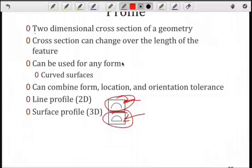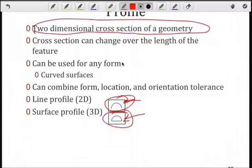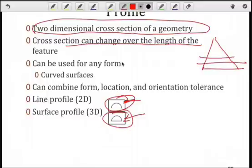To understand a profile, think of it as a two-dimensional cross-section of some geometry. It could be that that cross-section changes over the length of the feature. For instance, if I had a cone shape, then each two-dimensional cross-section has a circular profile. The diameter is increasing or decreasing, depending upon your perspective, but the profile remains the same.